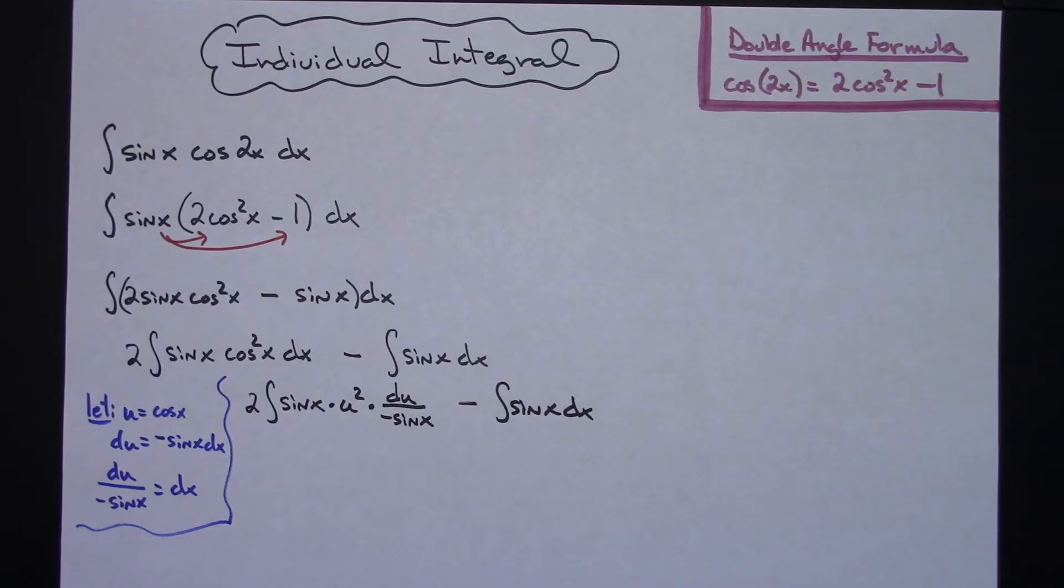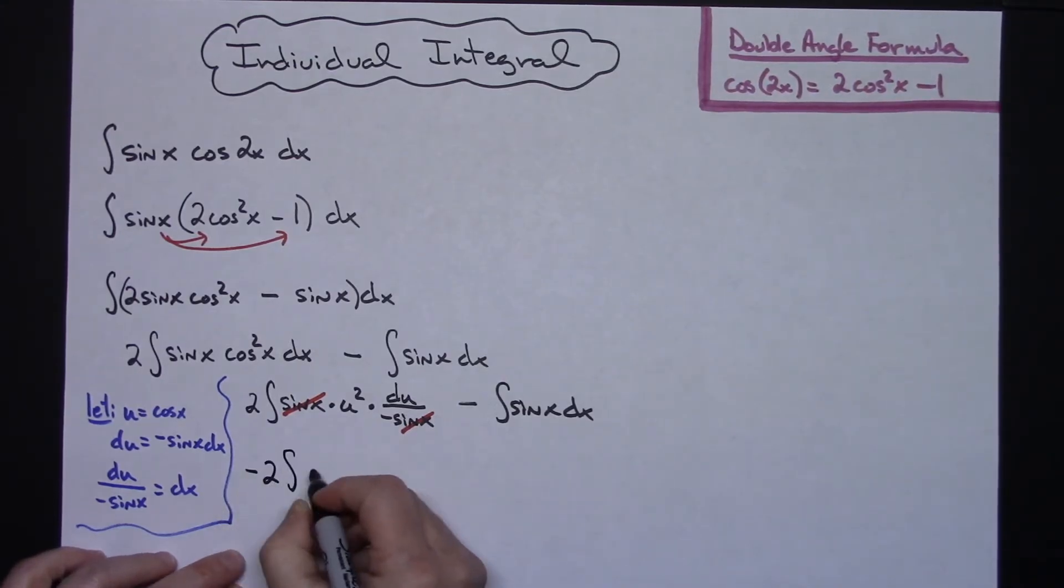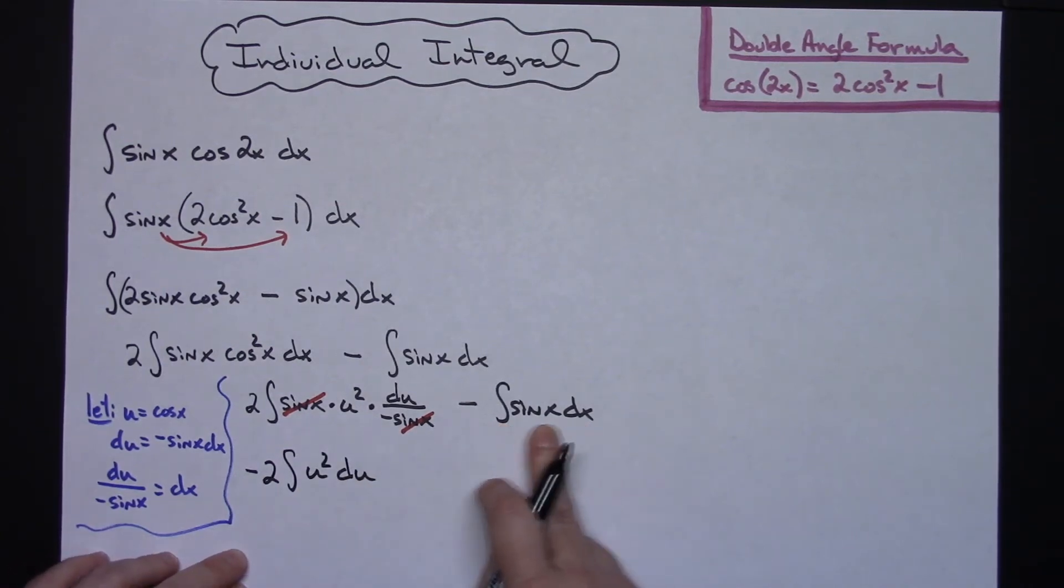Now that's going to allow me to cross out my sine x's and take that negative and pull it out in front. So then I'm going to have negative 2 integral u squared du. Since this integral is straightforward I'm just going to work that out. So it'll be minus the integral of sine x is going to be minus cosine x.